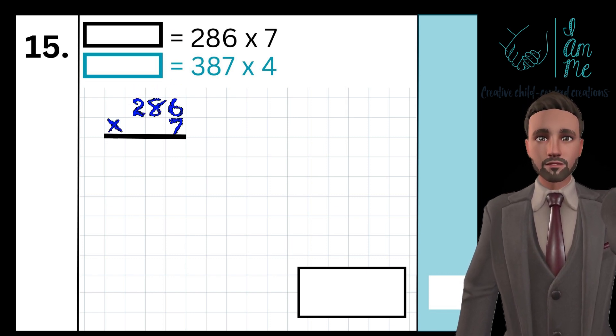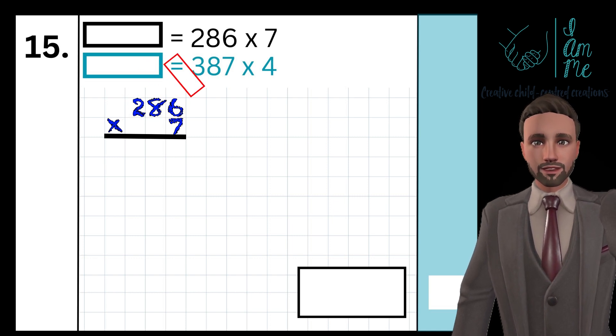You work left to right, multiplying each digit in the first row by the digit in the second row.